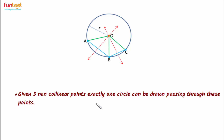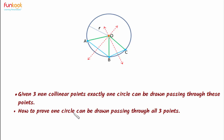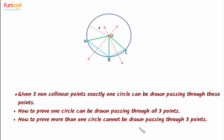Let us summarize what we have learned from this proof. If we are given three non-collinear points, then there is exactly one circle which can pass through these three points. We have also learned how one circle can be drawn passing through all three points, and that not more than one circle can be drawn passing through the given three points.